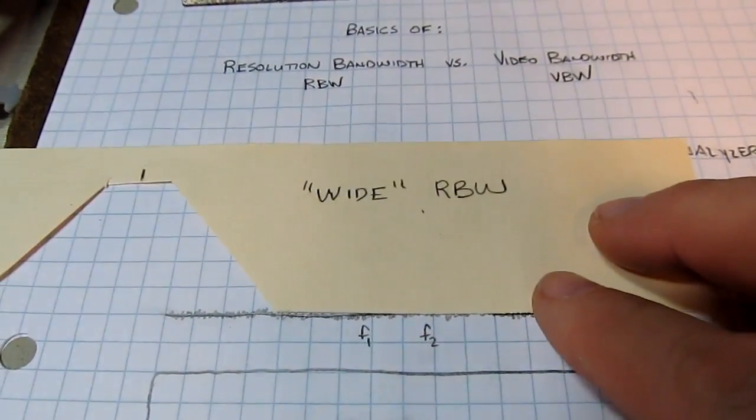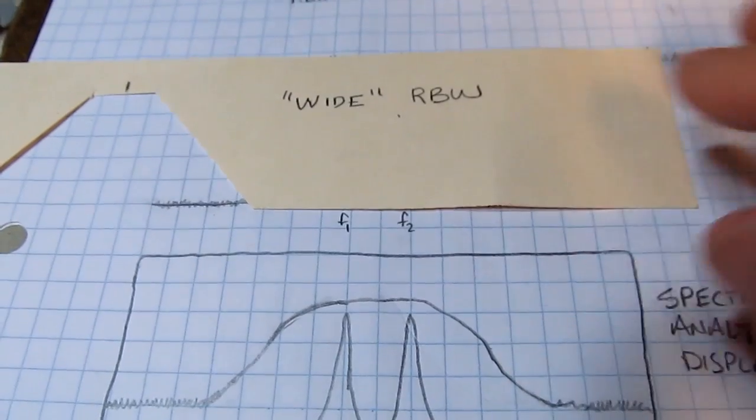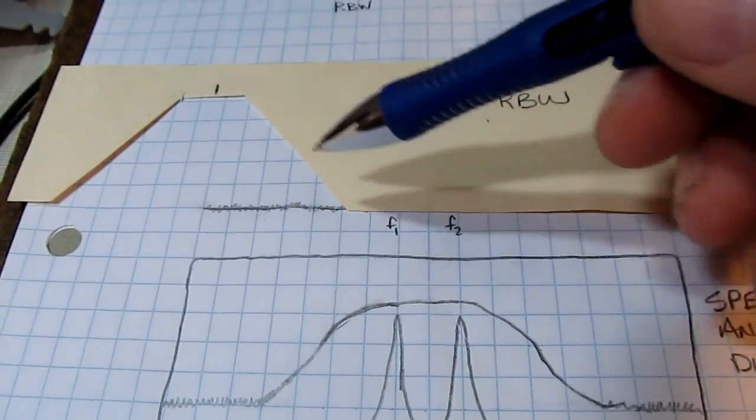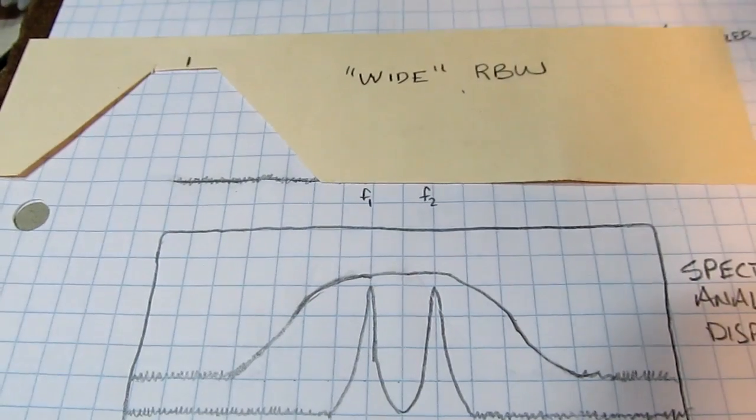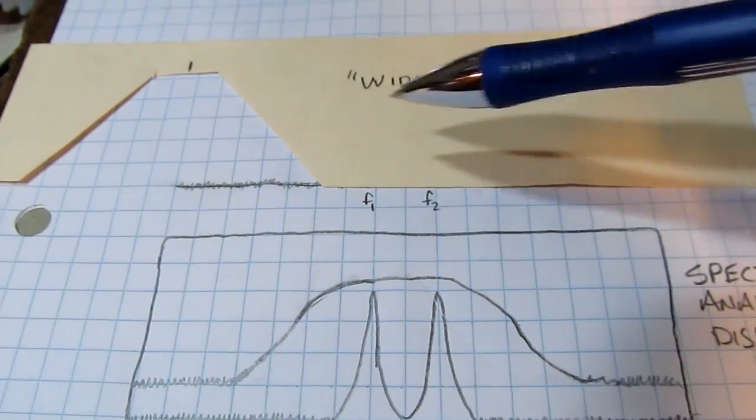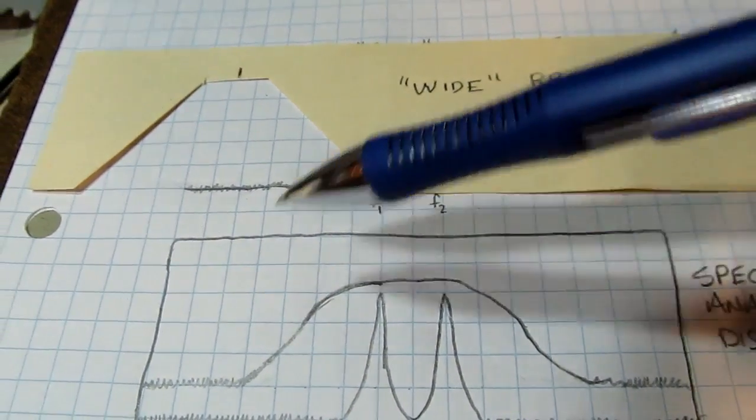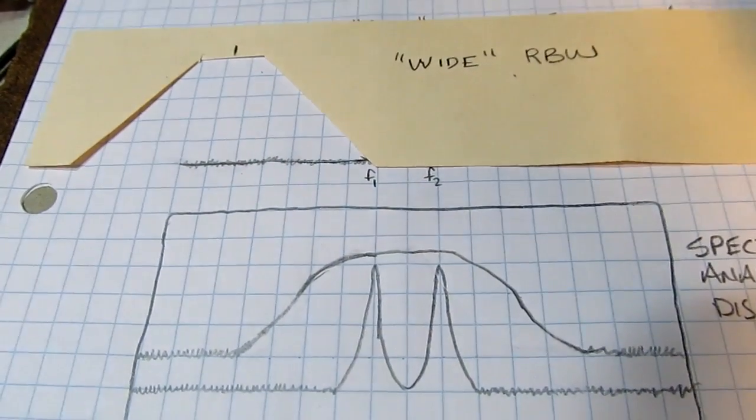Effectively we're going to sweep those things through the resolution bandwidth filter. Now let's say we had a wide resolution bandwidth filter. As we sweep this through, the power that's measured in this filter is going to be plotted out on the spectrum analyzer display. For the wide filter as we slide this through, up to this point we haven't seen any of those signals yet. So we're just plotting out essentially the noise or the noise floor of the analyzer.